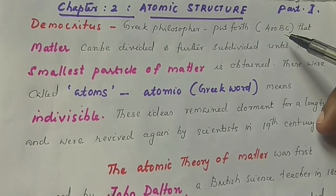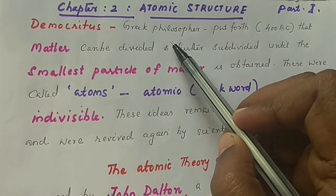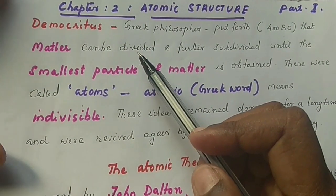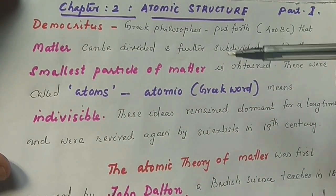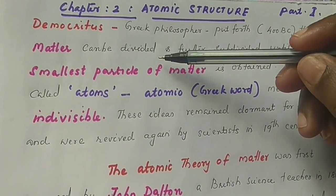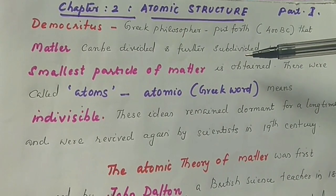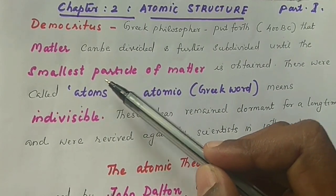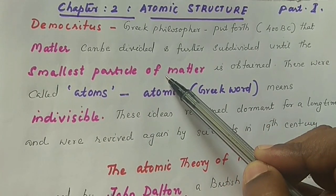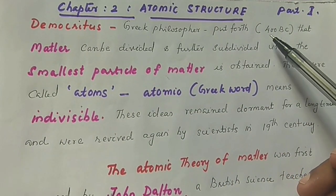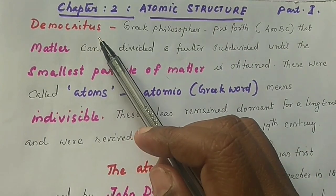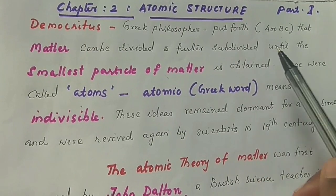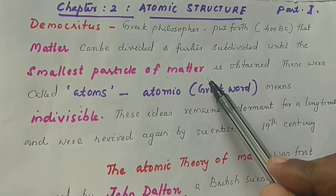First, in BC 400, a Greek philosopher proposed to divide matter into smaller and smaller substances. We divide and subdivide matter to the smallest particle. That is the smallest particle of matter. A Greek philosopher, Democritus, put forth that matter can be divided and further subdivided until the smallest particle of matter is obtained.